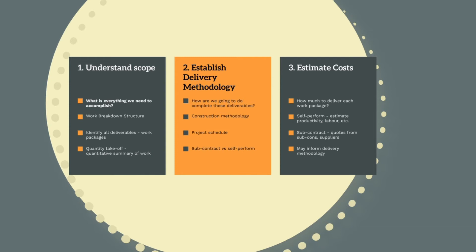In step one, we need to work out everything we need to accomplish to complete the project — what is everything we need to do to finish and hand over the project to the client? This involves creating the work breakdown structure and identifying all the unique project deliverables. These will be summarised into work packages. Next, we need to do a quantity takeoff and determine for each work package the quantum of work to be completed. For example, if we have a work package for subsurface drainage pipe install, how many lineal metres of drainage are required?